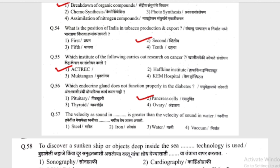The velocity of sound in what medium is greater than the velocity of sound in water? (Dhvanicha paanyatil vega peksha dhvanicha koshtyatil vega jast ahe.) Options: steam (sting), iron (lokhanda), water (paani), or vacuum (nirvata). Vacuum cannot transmit sound. Of the first three options, the answer is steam.